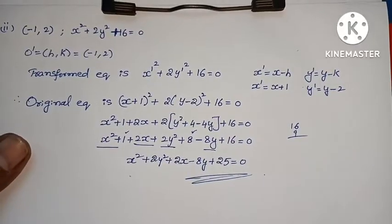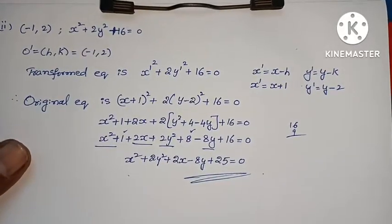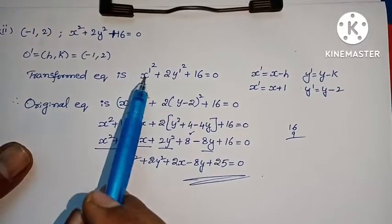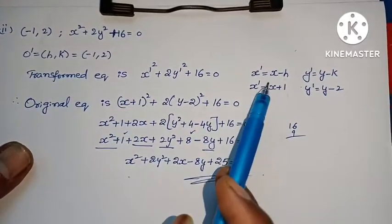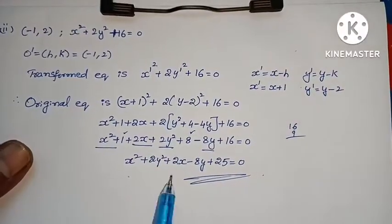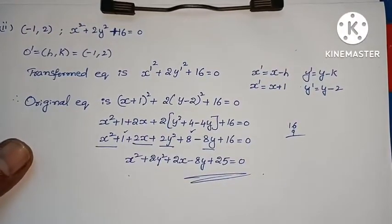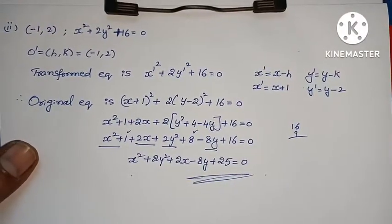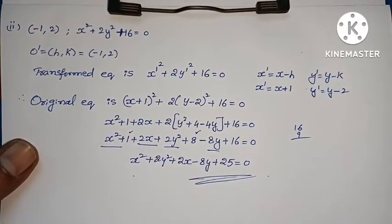There are two steps: just substitute x dash equals x minus h and y dash equals y minus k, then solve. That is the answer.